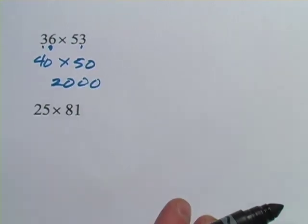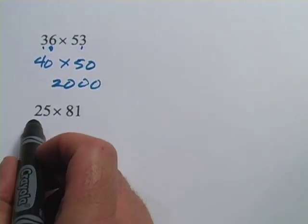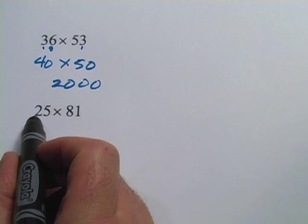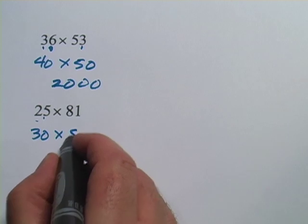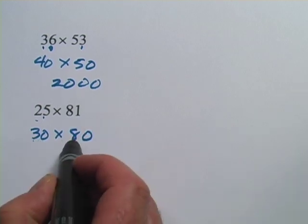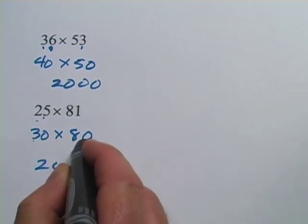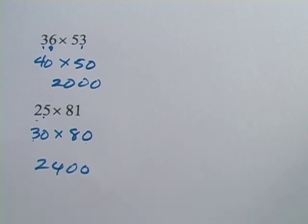Alright, last one, we have 25 times 81. Rounding to the tens, 25 will round up to 30, and 81 will round down to 80. And now I'll do 3 times 8 is 24, and then stick both those zeros on, and we get 2,400.